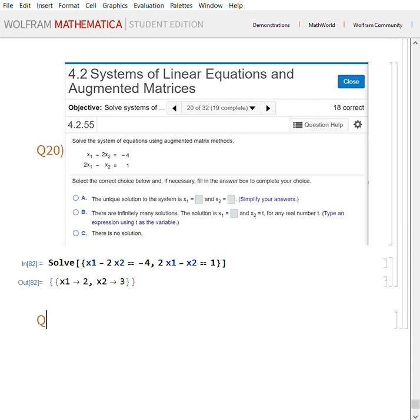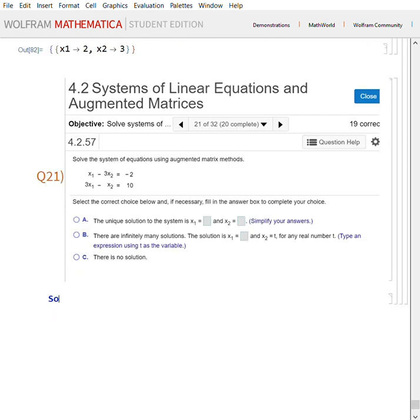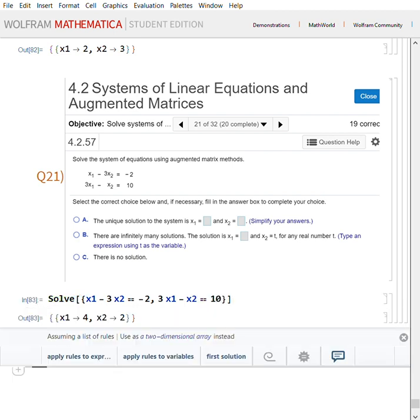All right, I'm gonna try to solve a bunch of those just so that you can get used to them. Same thing again. x1 minus 3x2 equals minus 2, comma, 3x1 minus x2 equals 10. Close curly bracket, big bracket, Shift+Enter. And you have a unique solution of x1 equals 4 and x2 equals 2. And the answer is correct.